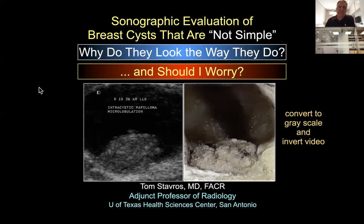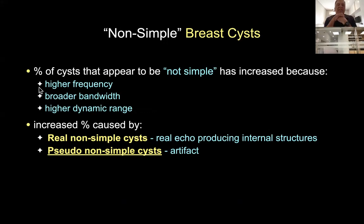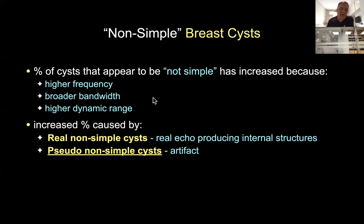The percentage of cysts that are not simple has increased over the past few decades for two reasons. First, better resolution—higher frequency, broader bandwidth, higher dynamic range—allows us to see real benign things inside fibrocystic change. Second, we've pushed scan parameters too far, causing artifact inside cysts. There are technical tricks we can use to minimize clutter artifact within cysts that make them appear non-simple when they really are simple.